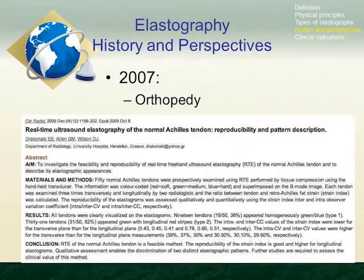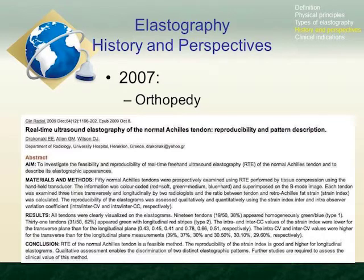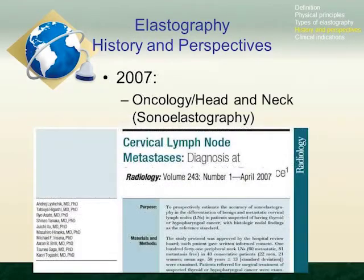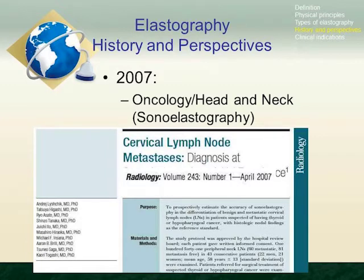In the early 2000s, first studies with transient elastography demonstrated its potential for assessment of hepatic fibrosis. In 2007, strain elastography was shown to characterize tendons in humans — specifically clinically normal calcaneal tendons — and was concluded to be a feasible method. Simultaneously, studies in oncology were published estimating the accuracy of sonoelastography in differentiating benign and metastatic cervical lymph nodes in patients suspected of having cancer. In 2008, the first study using acoustic radiation force impulse was published, after which mechanical tissue properties became reliably available for elastographic quantitative assessment.